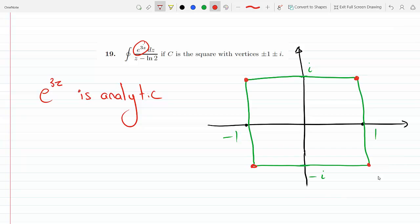Yeah right, so this is analytic everywhere. Now what's ln(2)? ln(2), if you put it on the calculator, it's definitely less than 1 because ln(e) is 1.